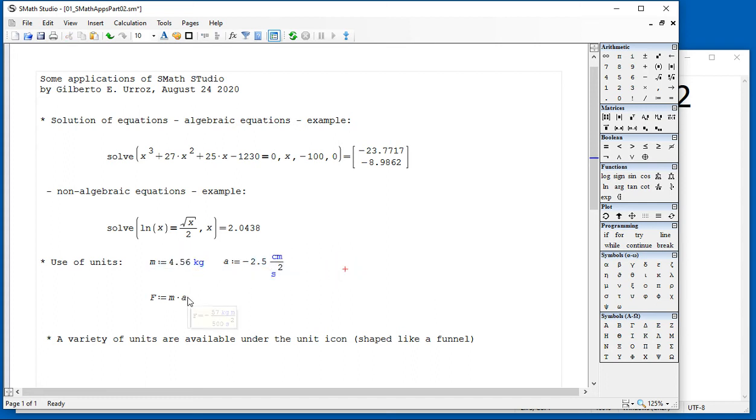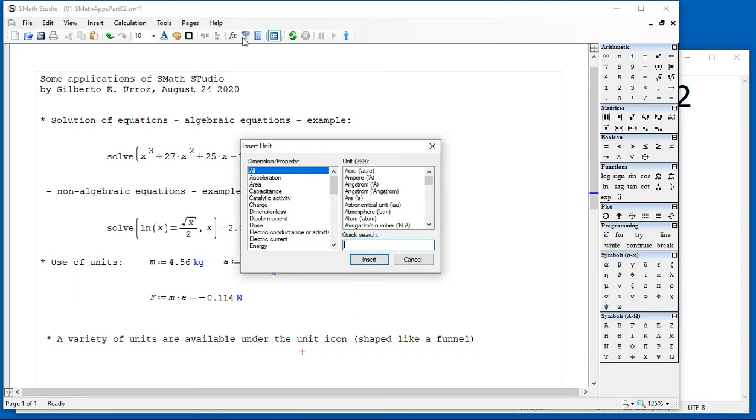If I want to calculate a force here, mass times acceleration, say equal, it will give me a result in the units of the international system. Although, you can change the unit to units of the English system if need be. There's a variety of units, as I mentioned, available under the unit icon, this one that looks like a funnel. And you can decide what variables you are trying to operate on in order to obtain your result.